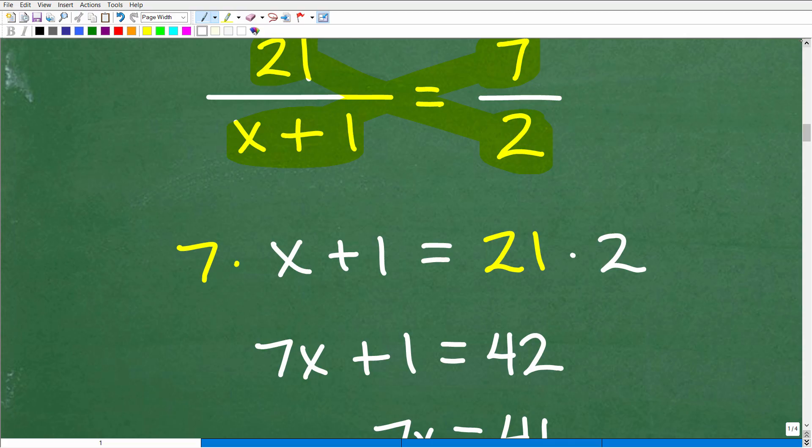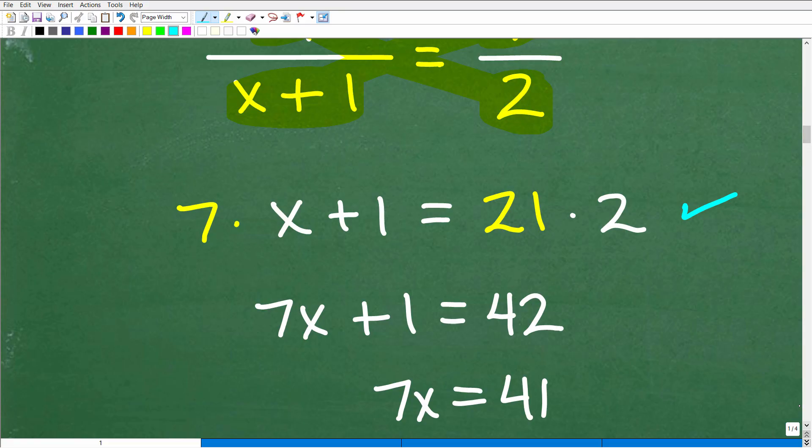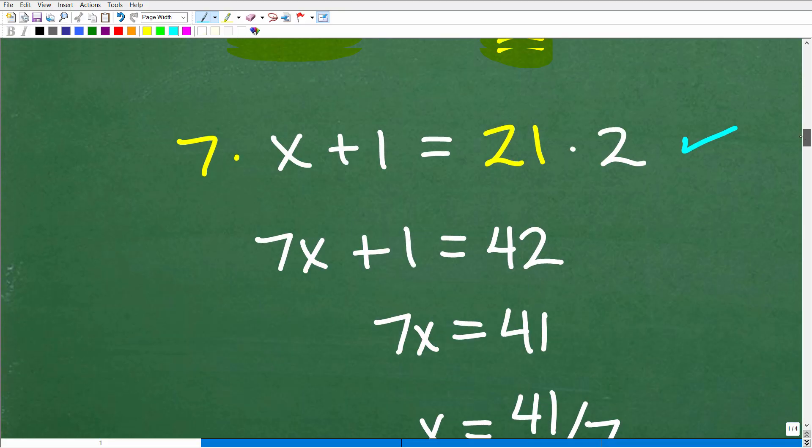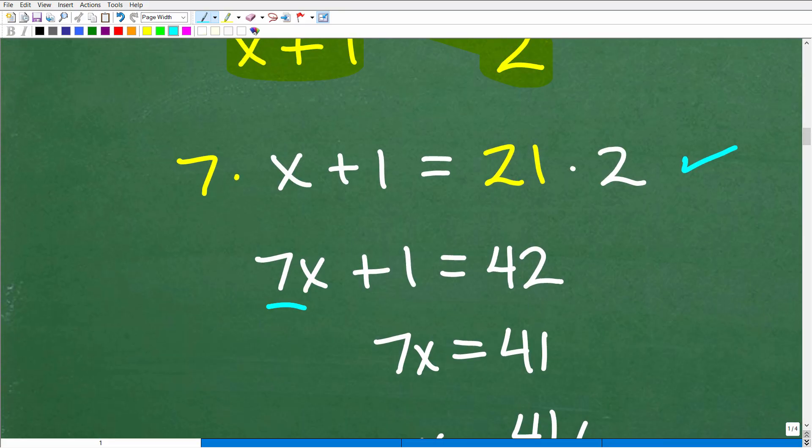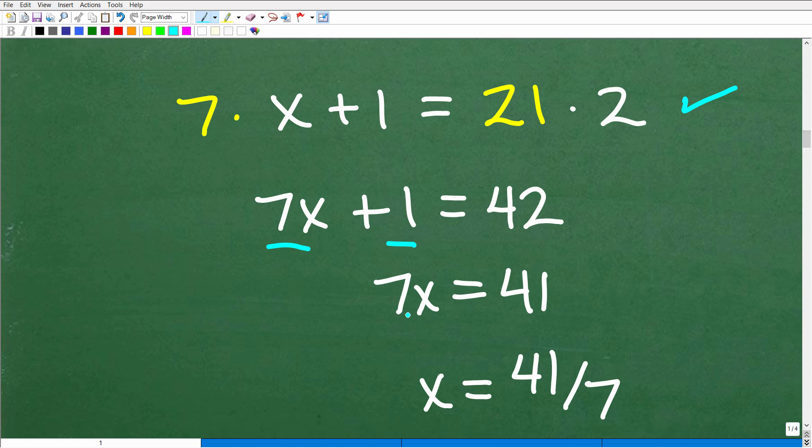So, here we're going to have 7 times x plus 1. You can see that work, I already did it. 21 times 2, looks good to me. And so now let's just work through the rest of the problem. And I have 7 times x, 7x, plus 1 is equal to 42. Subtract 1 from both sides of the equation. I'm going to get 7x is equal to 41. And then to solve for x, I'm going to divide both sides of the equation by 7.